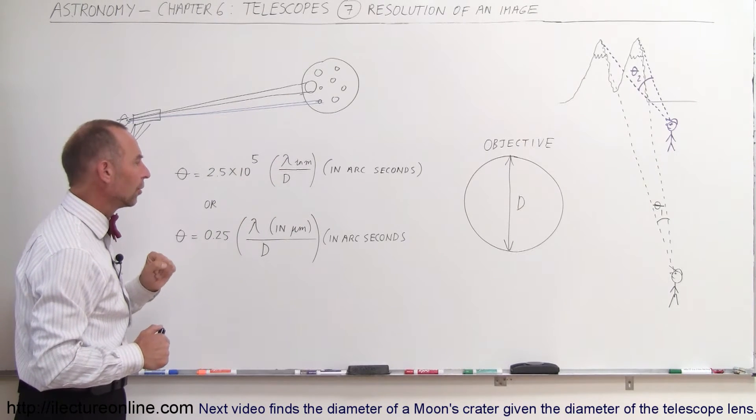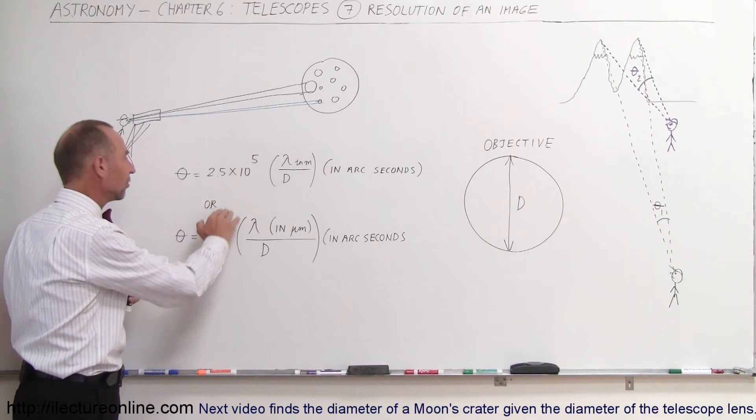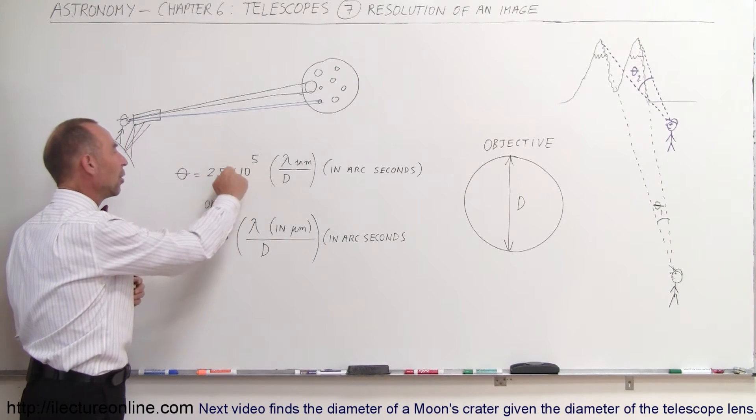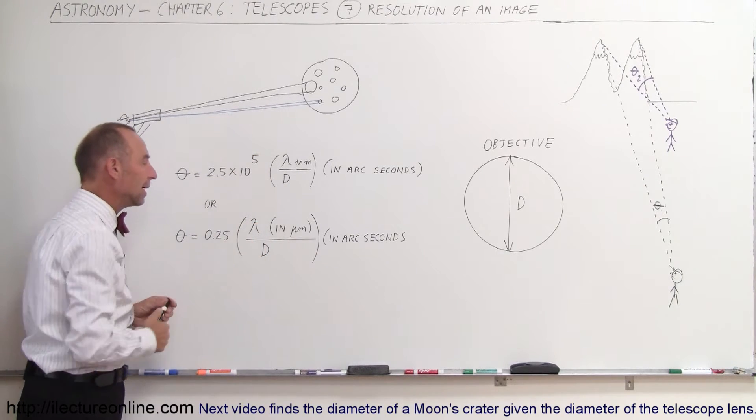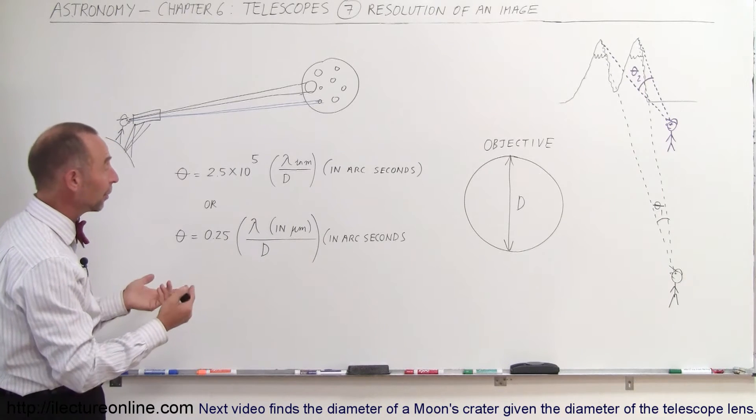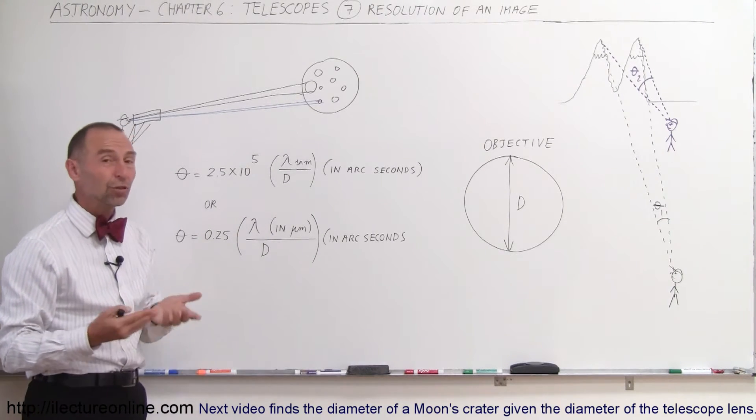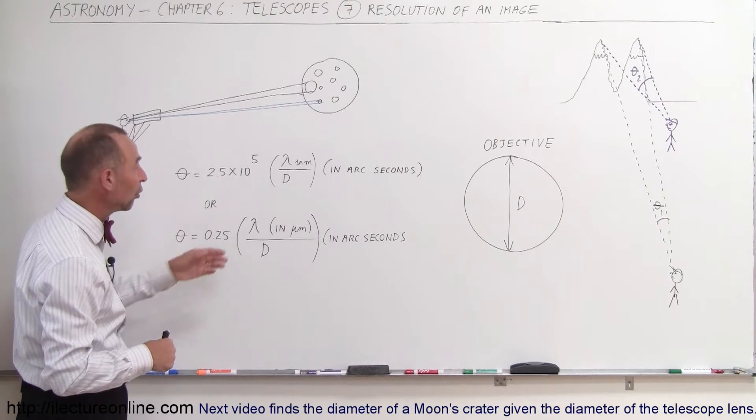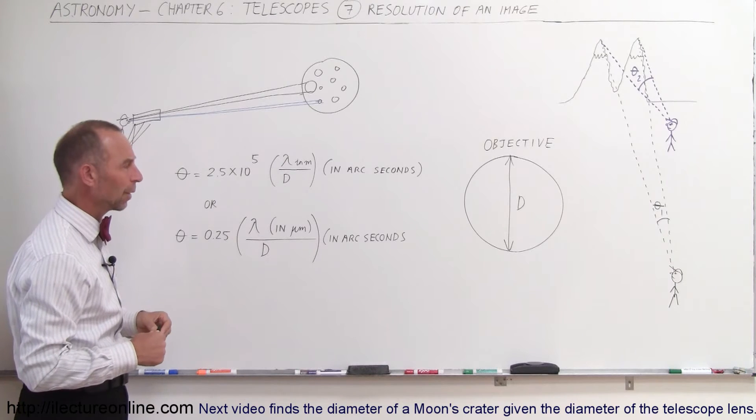Lambda in meters. Now, in astronomy, we also sometimes write the equation like this. Instead of 2.5 times 10 to the fifth, we divide this number by a million, and now we express the wavelength in micrometers. For example, for visible light, that would be anywhere from, let's say, 0.4 to 0.7 micrometers, or if you want to express it in meters, you can use this equation, whatever you feel more comfortable with.